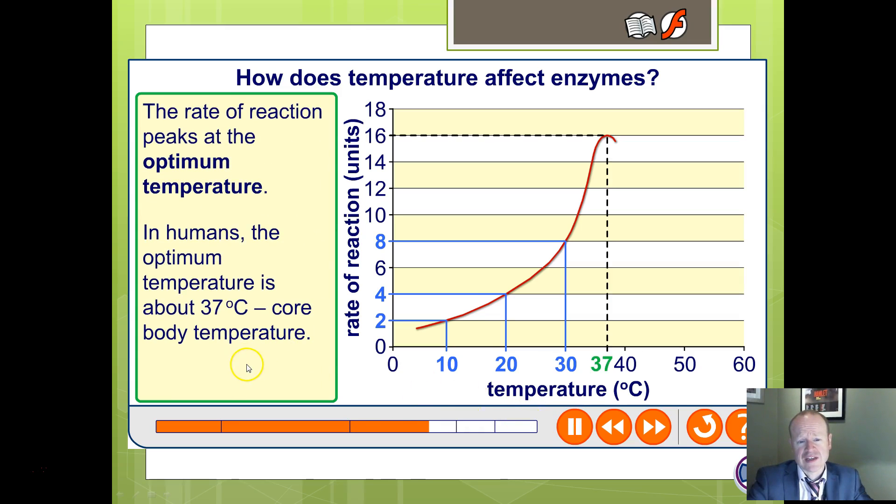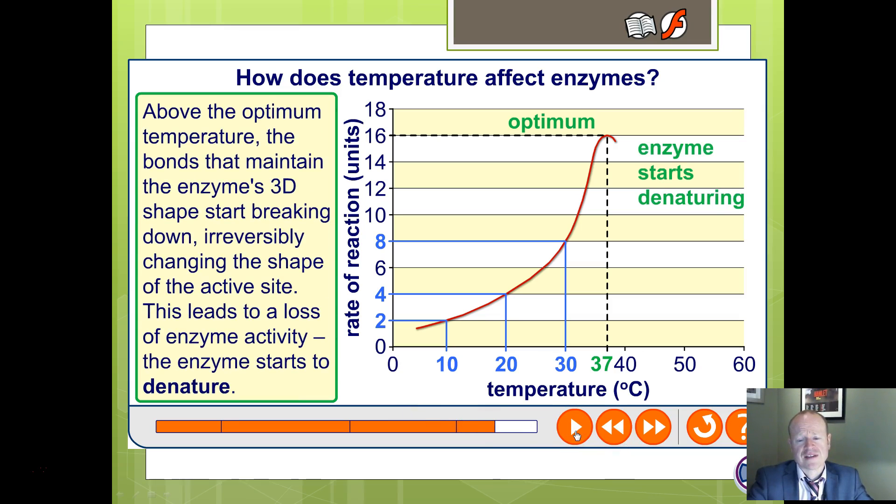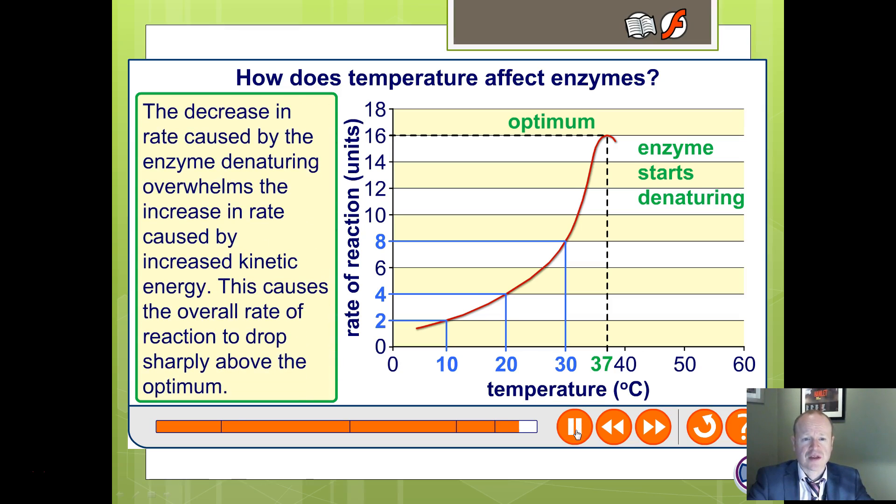It continues up to an optimum. Obviously, in humans, for some enzymes, the optimum is 37 degrees centigrade. Not necessarily true for every single enzyme in humans, but probably for most. And above that, then it starts to affect the enzyme 3D structure and it irreversibly starts to break it down. This is called denaturation. Remember, enzymes aren't alive, so they can't be killed in the first place, but they are denatured. And that rapidly causes a sudden drop in the rate because you're going to end up with the enzyme being broken down and no longer being able to do its job.